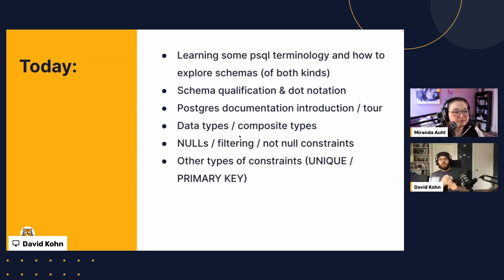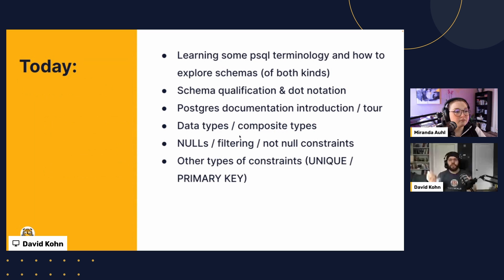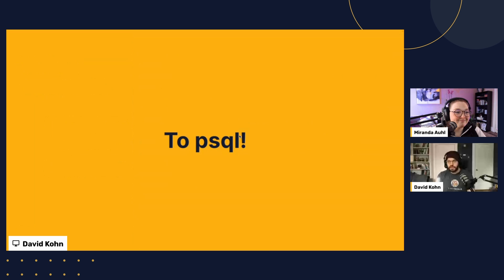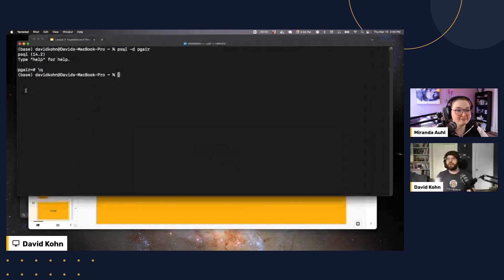Now let's learn some psql terminology and explore our schemas of both kinds. We'll learn about schema qualification and dot notation, look at the Postgres documentation, and go over data types, nulls, and other constraints — which comes from exploring how a table is defined so you can understand how tables relate. With that, we're going to start off with a couple of concepts and then jump over to psql.